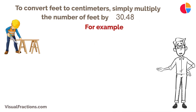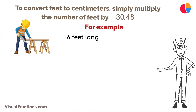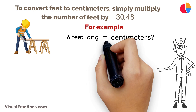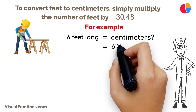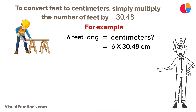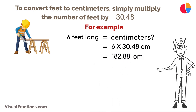For example, if you're measuring a table that is 6 feet long and need to know its length in centimeters, just multiply 6 feet by 30.48. That gives you a total of approximately 182.88 centimeters.